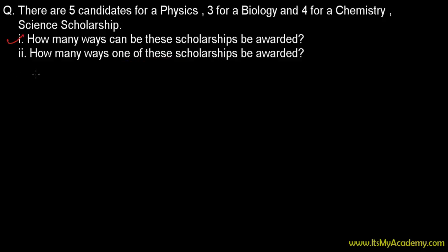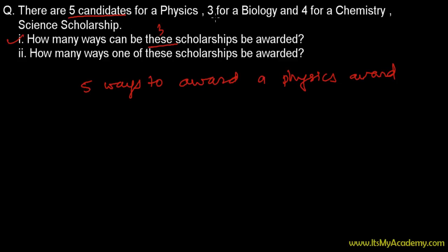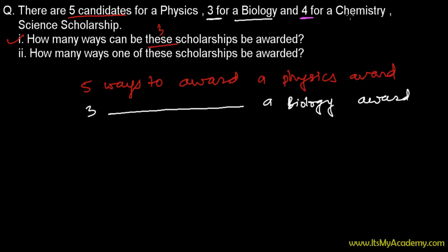Let's first deal with the first question: how many ways can all three scholarships be awarded? There are five candidates for physics, so there are five ways to award the physics scholarship. Similarly, there are three candidates for biology, so there are three ways to award the biology scholarship. And there are four candidates for chemistry, so there are four ways to award the chemistry scholarship.